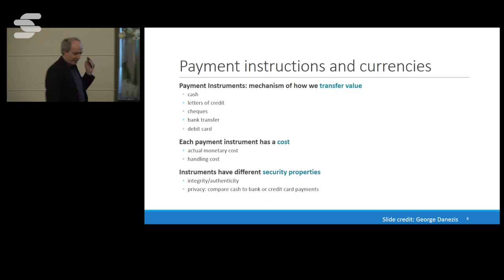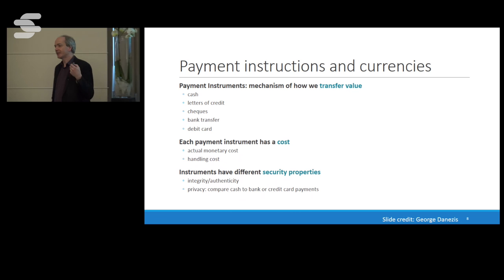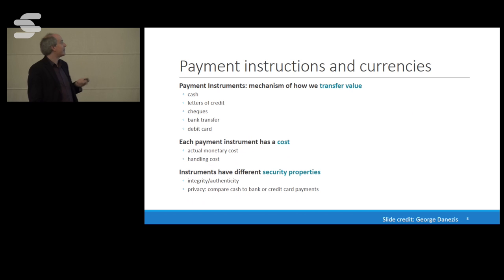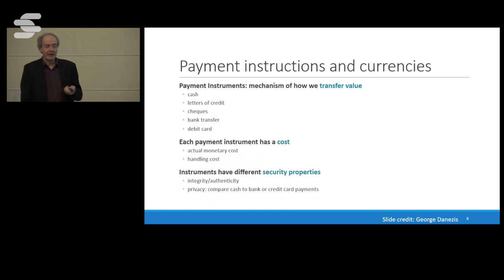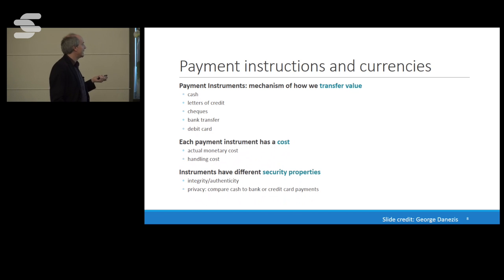Now to something completely different: payment. If you want to understand Bitcoin — which is of course the source of blockchain — you have to understand payment. Payments are very old as a system; it's a way to transfer value, and we have many of those: cash, letters of credit, checks, bank transfers, debit cards, and so on. Payments cost money.